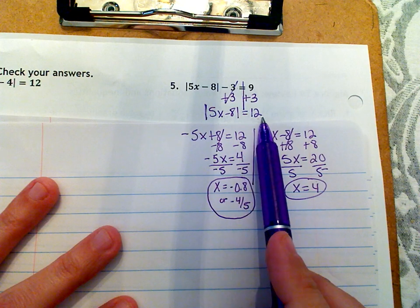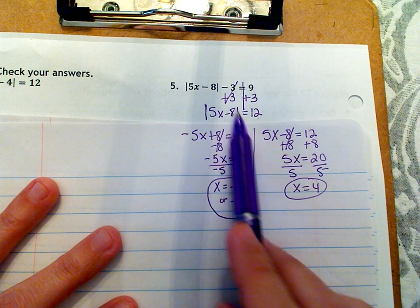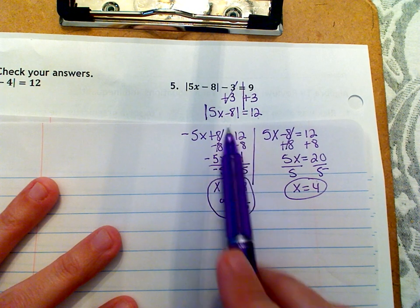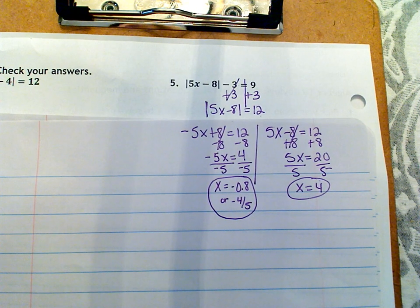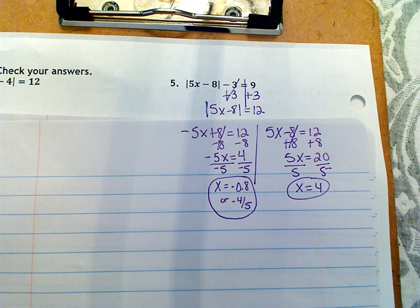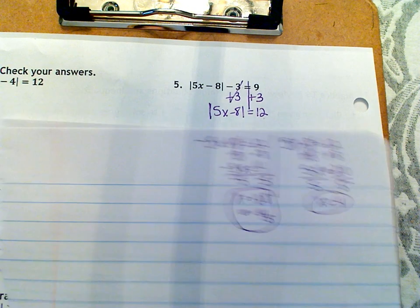This is where our y equals 12 would intersect both sides of the V for this absolute value equation. I'm just going to keep going. Let's just keep going. All right, so number six.